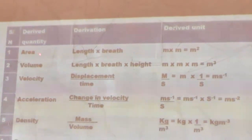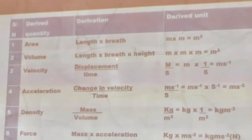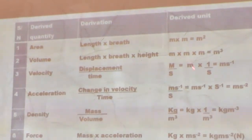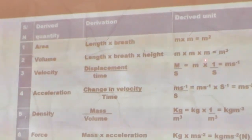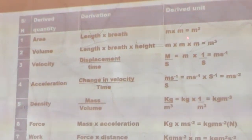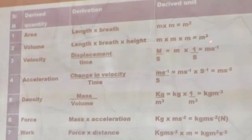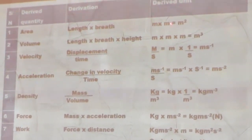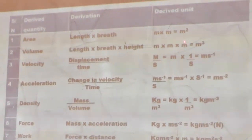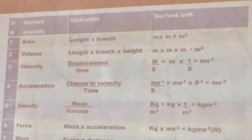Number one: we have area. The formula for area is length multiplied by breadth. The unit of length is in meter (m), and the unit of breadth is also in meter (m). When m is multiplied by m, we have m squared — each m is to the power of one, and adding the powers gives two. Therefore the SI unit of area is meter square.